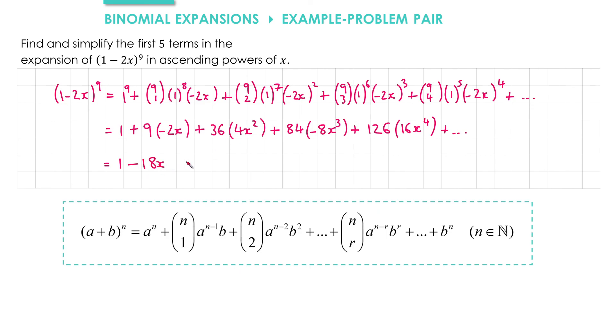We've got 36 times 4 gives us 144x squared.